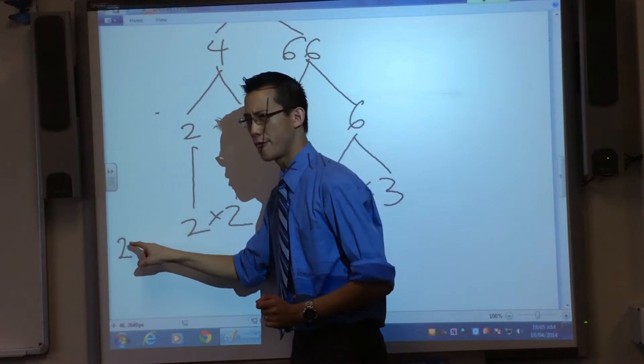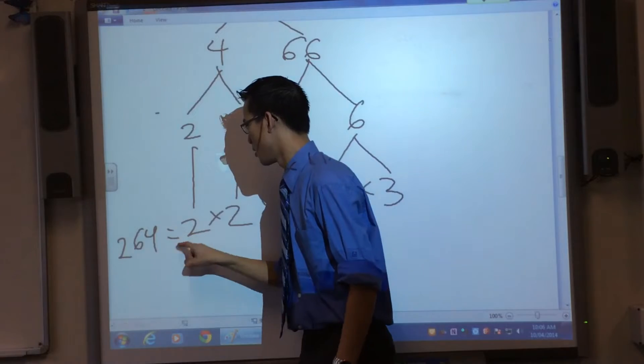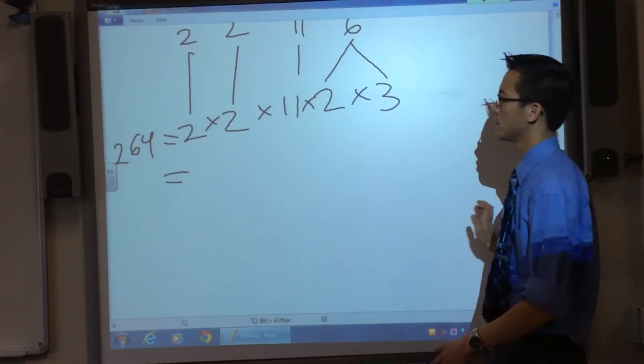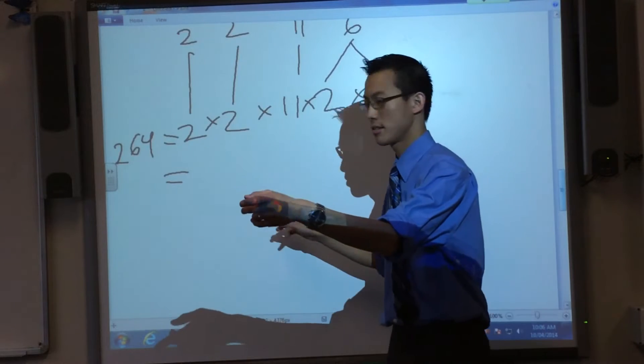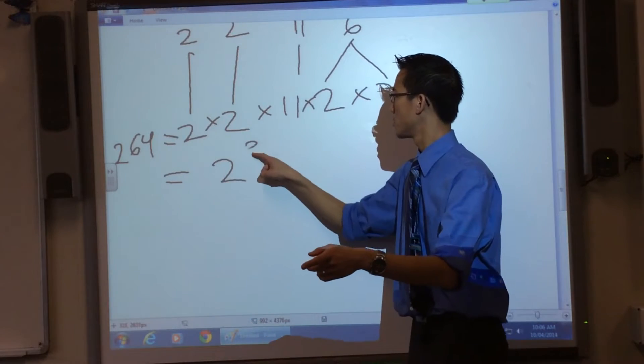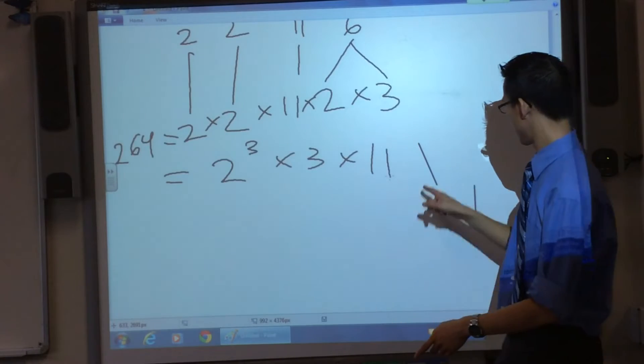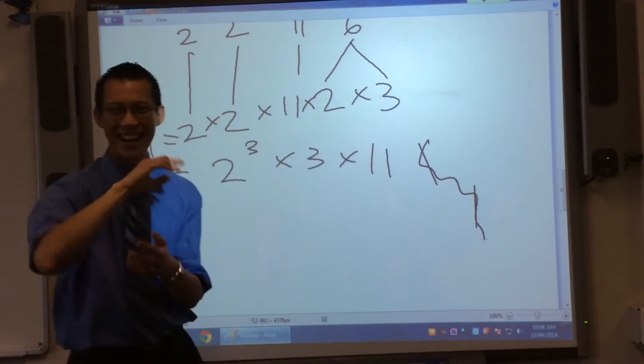What was my number? 264. So, how can I write this in index form so it's a bit neater for us? This will be, yeah? 2 cubed times 3 times 11. Excellent.